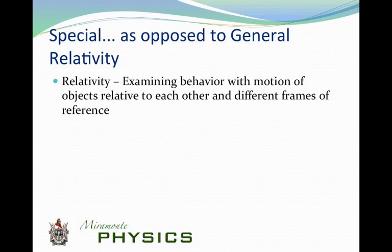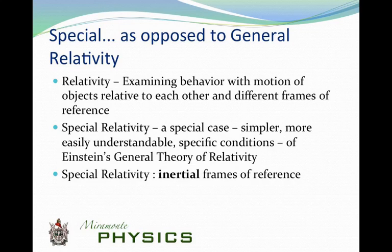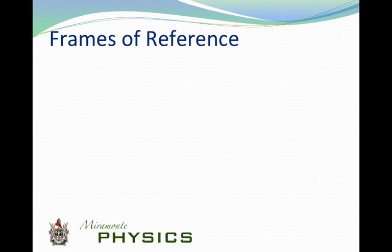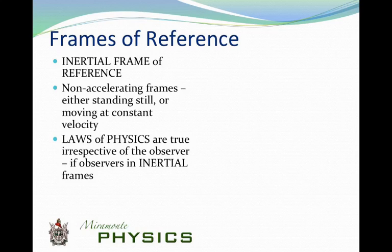Relativity — think 'relative' — examines the behavior and motion of objects relative to each other in different frames of reference. You can talk about one object's motion with respect to some other object or something that's not moving. Special relativity is a special case that is simpler because we're going to talk about things moving in inertial frames of reference, compared to general relativity, which deals with non-inertial frames. An inertial frame of reference is simply a frame that is not accelerating. If you're moving at constant velocity or not moving at all, you're in an inertial frame. The laws of physics are true irrespective of the observer, as long as observers are in inertial frames.